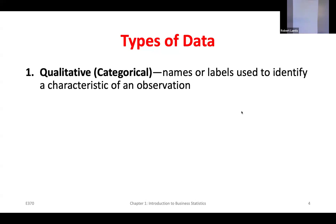Quantitative means we've got numerical data — actual numbers we can work with. We can do a lot more with quantitative data. We'll talk about ways we can make qualitative data more workable and come up with more statistics from it. But for now, think about most of the data we'll be looking at in this class as numerical. Going back to the used car example, mileage would be quantitative — I can put an actual numerical value to it.